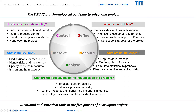In the control phase we answer the question: how can we ensure the sustainability of our improvements? First, the degree of improvement is calculated on a statistical basis and the achieved financial benefit is calculated.